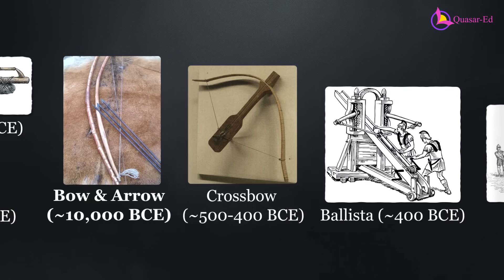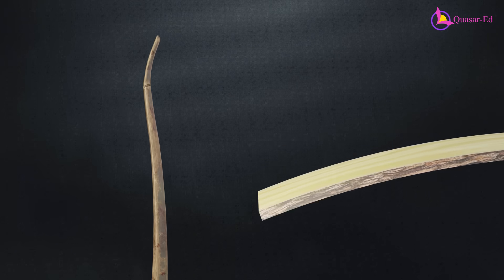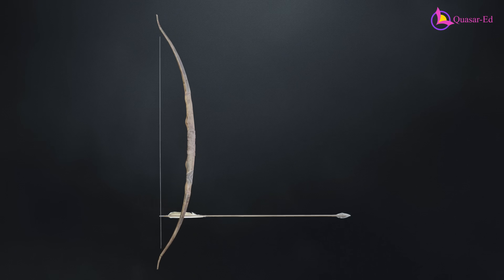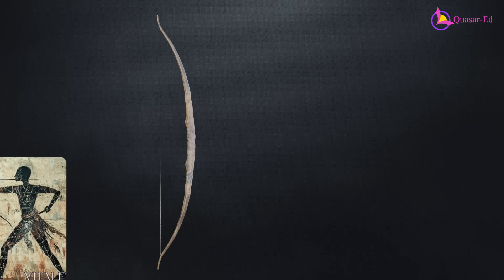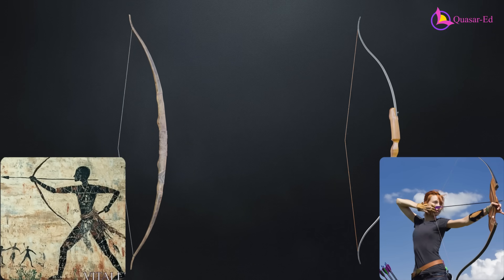Bows are among the earliest mechanical weapons invented by humans. By harnessing the elastic properties of wood, early civilizations stored potential energy by bending the bow and releasing it through an arrow. From ancient history to modern times, bows have relied on this same fundamental principle.